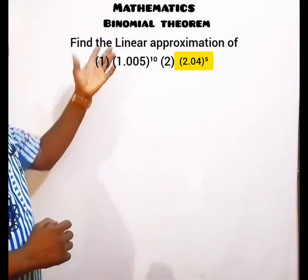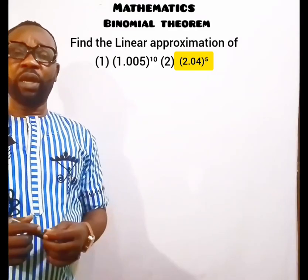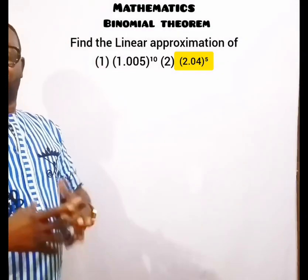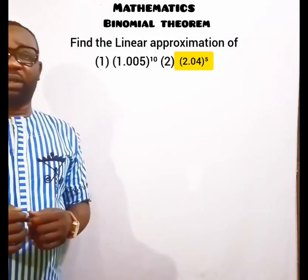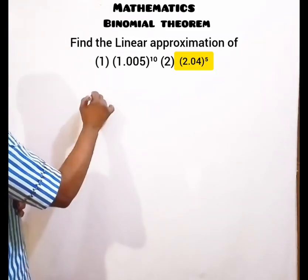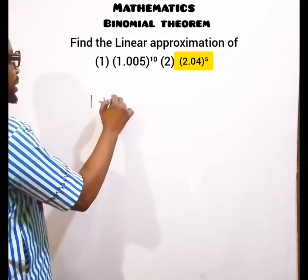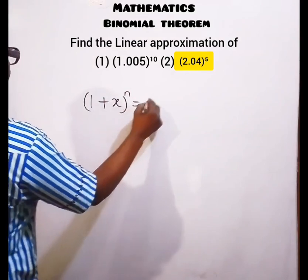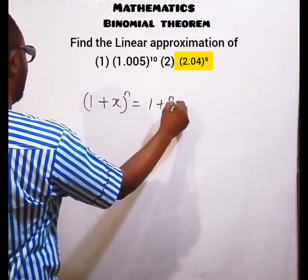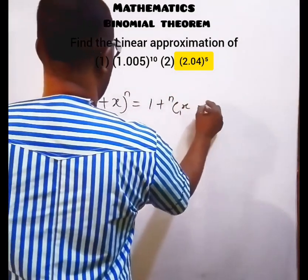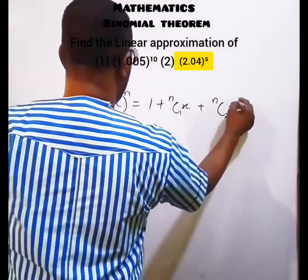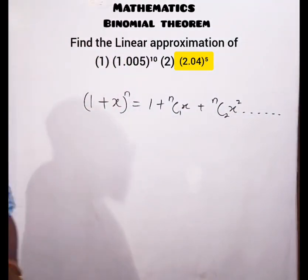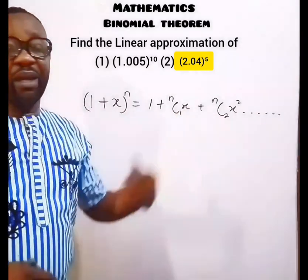We are still under the binomial topic. In binomial expansion, the expansion of (1 plus x) raised to the power of n is equal to 1 plus nC1·x plus nC2·x² and so on. That is how the expansion goes.